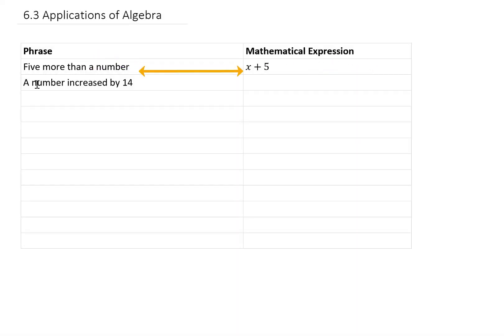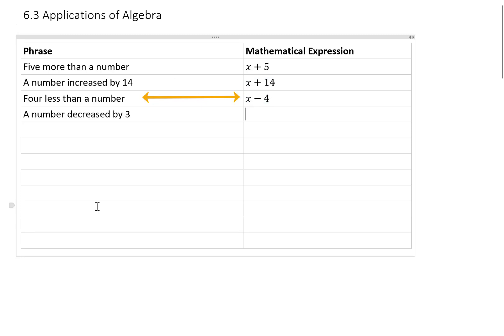Let's say our phrase instead is a number increased by 14. Again, our unknown number we're going to call x and to increase that by 14, we also add 14. If our phrase was 4 less than a number, then we would start with that unknown number x and subtract 4 from it. If our phrase was a number decreased by 3, we would start with that number and we would decrease it by 3 by subtracting 3.